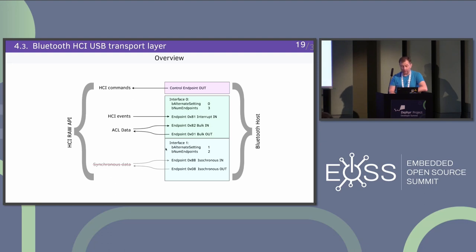What happens if you plug it in with multiple interfaces to, for example, a Linux host: it tries to claim all interfaces. If one of them is CDC-ACM, you can't access that anymore. So with the current stack, provide only a single function device — don't combine it with CDC-ACM or DFU. There was a fix provided to the BT USB driver about interface numbers, but this issue is still there.